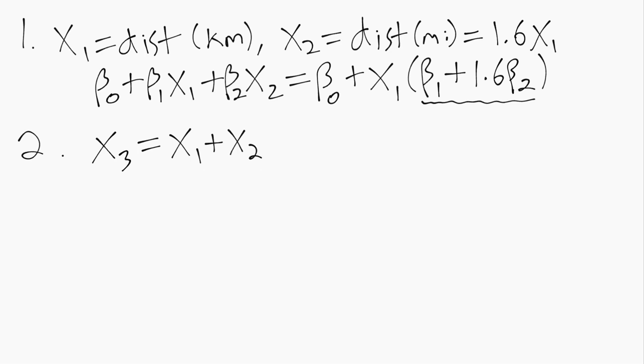More generally it would be a problem if for any constants a and b we had ax1 plus bx2, because that is a linear combination by definition. So that would also be perfect multicollinearity which we can't have in our model.